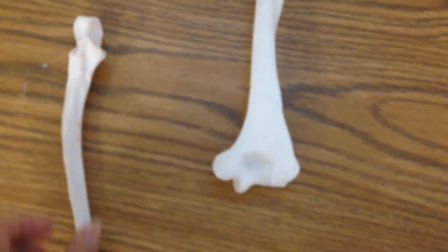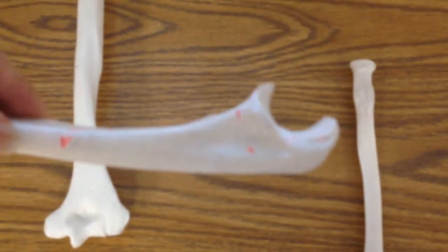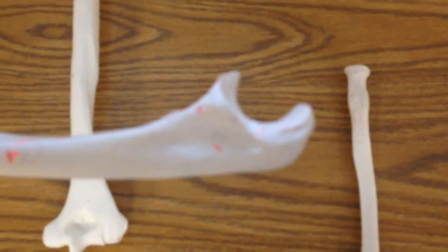Next, we're going to take a look at the ulna and the radius. The ulna is easy to distinguish because of its U for ulna.